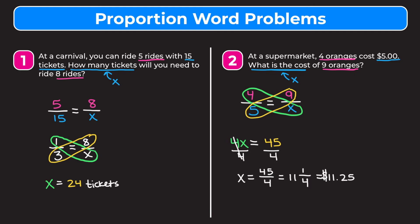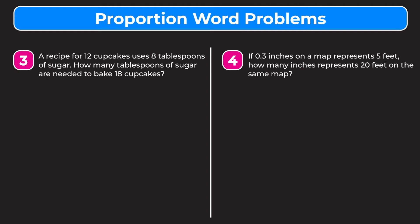I encourage you to pause and try the next two examples on your own. Example three: a recipe for 12 cupcakes uses 8 tablespoons of sugar — how many tablespoons are needed for 18 cupcakes? We set up ratios of cupcakes to tablespoons of sugar. From the first sentence: 12 over 8. Set equal to the second part: 18 cupcakes over x tablespoons, so 18 over x.